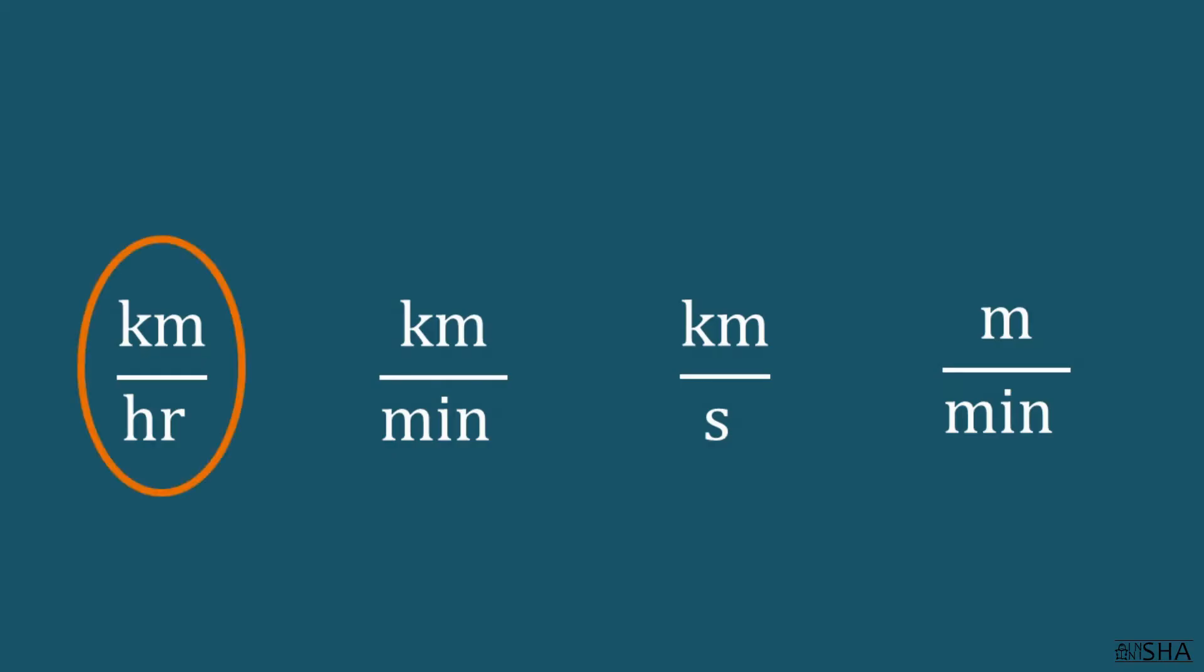Note that the name of the unit of speed is written as a fraction. The units of length are written in the numerator of the fraction and the units of time in the denominator.